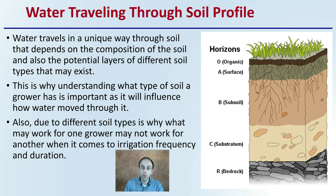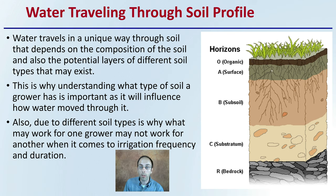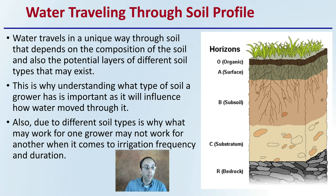Looking at the soil profile in general, soil scientists will refer to horizons: the O horizon being the organic or very top layer, the A which is the surface layer, B is the subsoil, C gets down into deeper areas where roots typically do not travel, and R down here is the bedrock. Understanding the type of soil a grower has is important as it will influence how water moves through it.